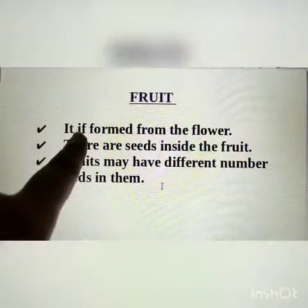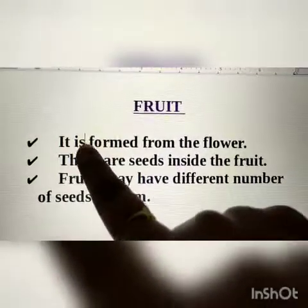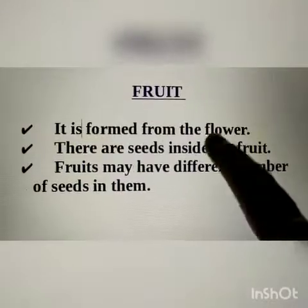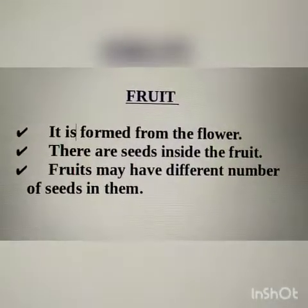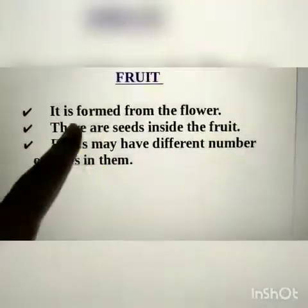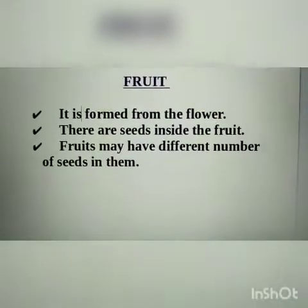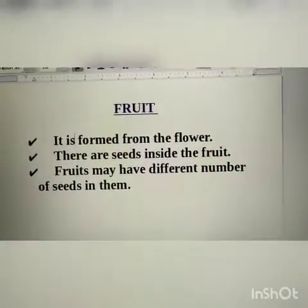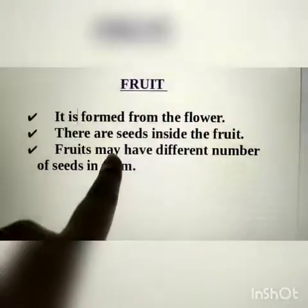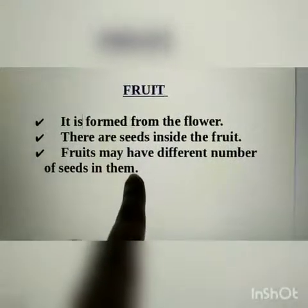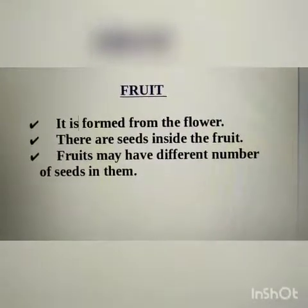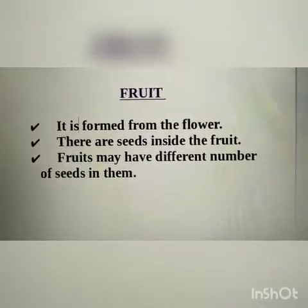Fruit is formed from the flower — it is a part of a plant which is developed from the flower. There are seeds inside the fruit, meaning most fruits contain seeds inside them, and fruits protect the seeds. Fruits may have different numbers of seeds in them — some fruits may have a single seed, while others may have more than two seeds.